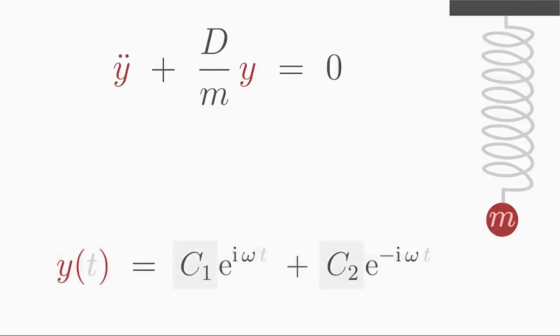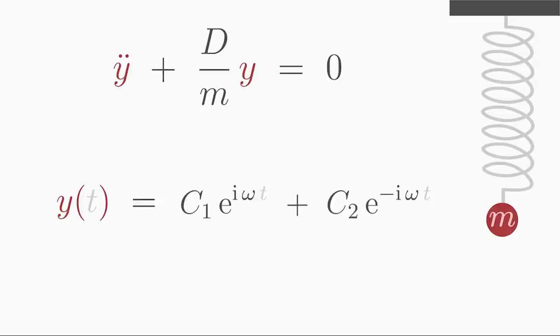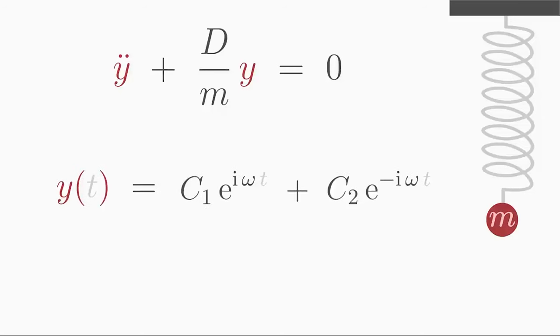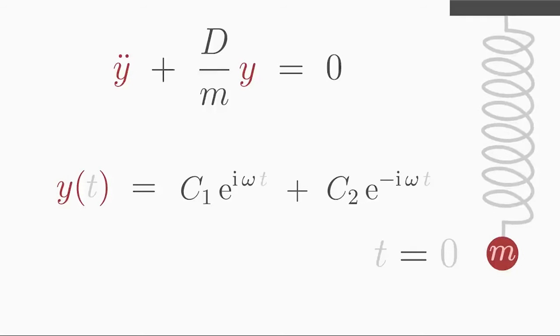Before that, let us determine the unknown constants c1 and c2 with initial conditions for our problem. For example, we could have observed that at the time t equals 0, the displacement of the spring was 1. The spring was displaced to the maximum, so the initial condition is y of 0 is equal to 1.